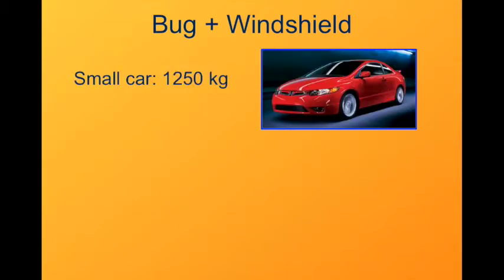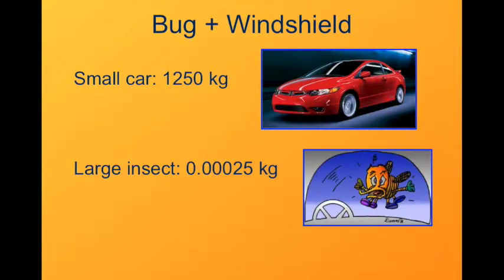So here if we have a relatively small car, say, one and a quarter metric tons, and a fairly large insect, say, a quarter of a gram, well, we have a huge mass difference here. Something on the factor of about a million.